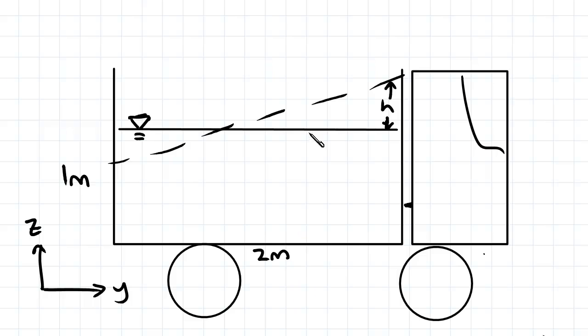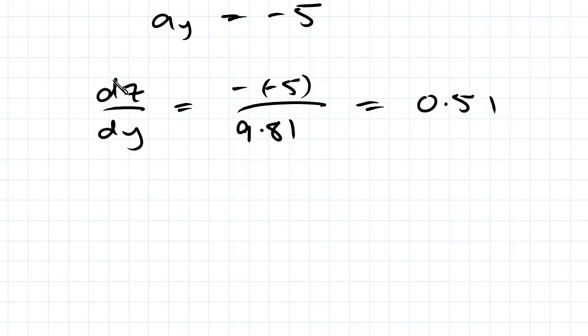And dy, looking at the dimensions of the truck, will be half the length of the container, which is 1 meter. So dz is h, dy is 1, and we get h equal to 0.51 meters.